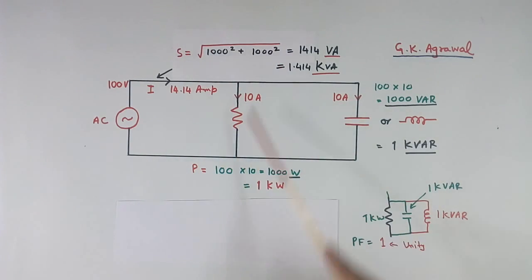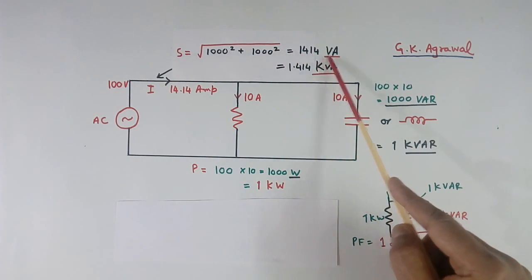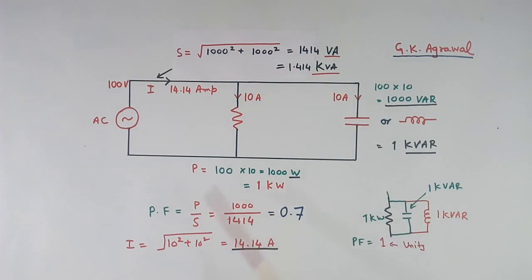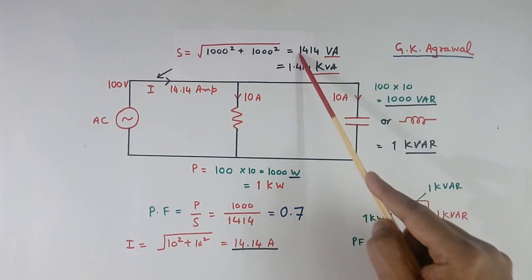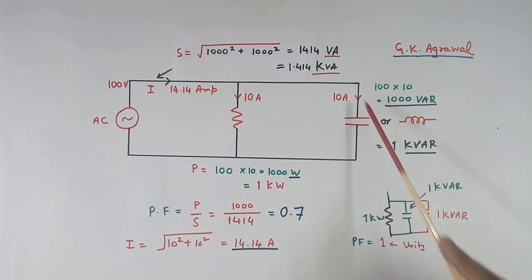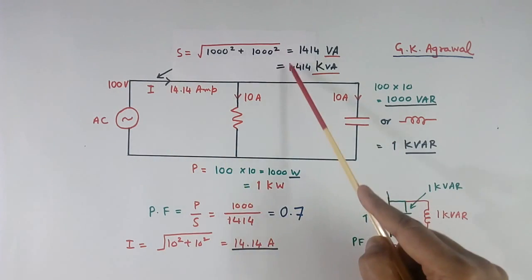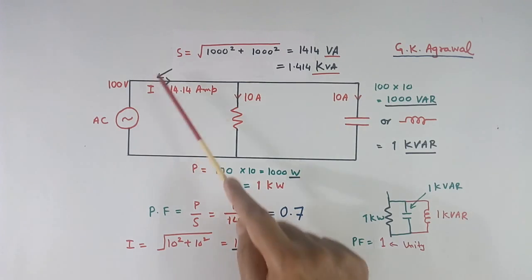Now total power here will be square root of square of this plus square of this, equal to 1414. If you calculate it will come 1.414 kVA. Power factor will be P by S. P is 1000 Watt, S is 1414, it will come 0.7. Current here will be square of this plus square of this under root, it will come 14 ampere. If we multiply this voltage with this current, again you get same figure. So this circuit has 1 kW active power, 1 kVAR reactive power, and total VA power 1.414 kVA. Power factor is 0.7.